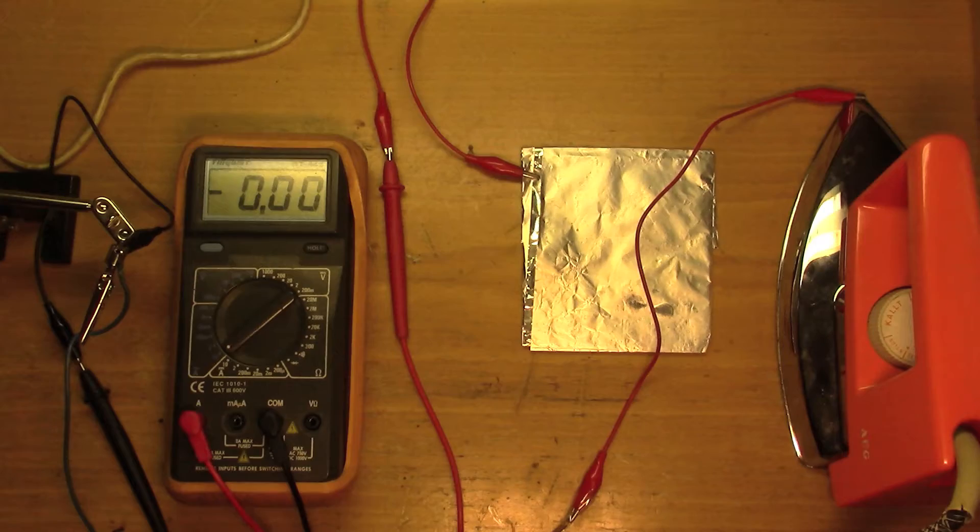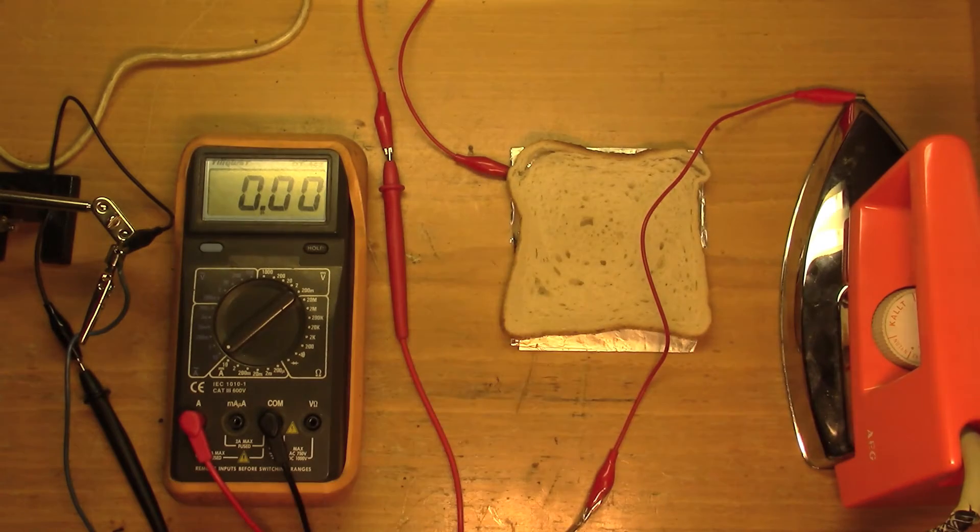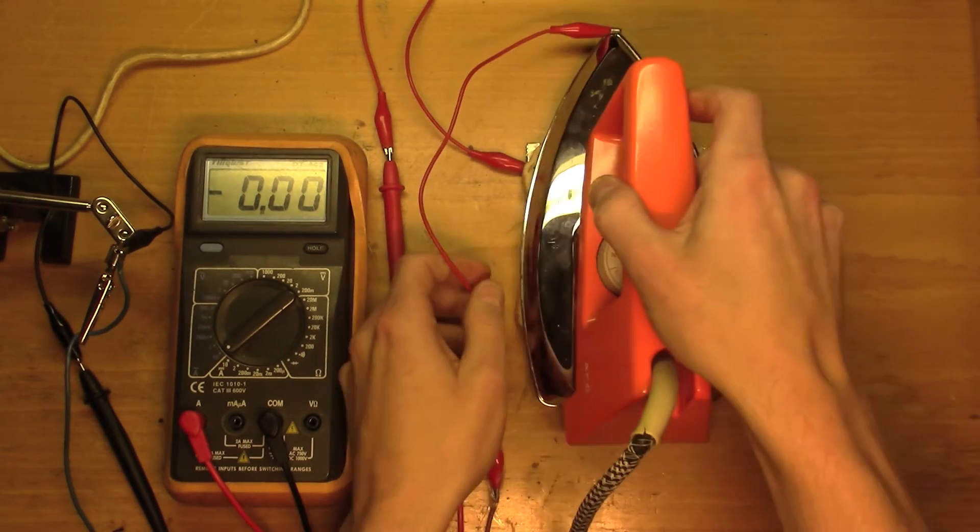Now it's hooked up to the mains electricity, 230 volts. The current through the bread can be read from the multimeter.